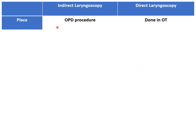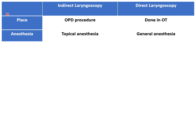Indirect laryngeal examination is done as a routine OPD procedure. While for direct laryngoscopy, the patient needs to be admitted and this procedure is done in the operation theater. Indirect laryngeal examination can be done under topical anesthesia by spraying lignocaine 10% into the oral cavity and pharynx, which will anesthetize the local area. While direct laryngeal examination requires general anesthesia.